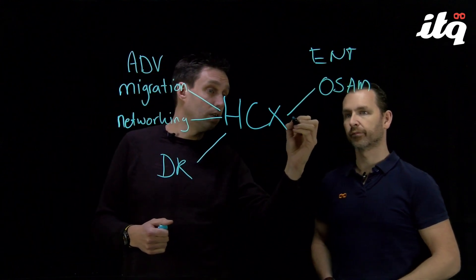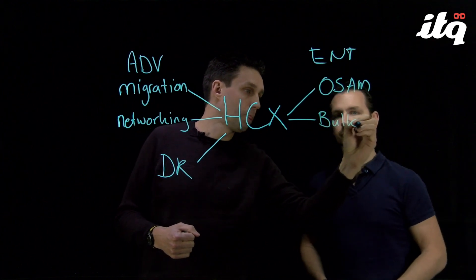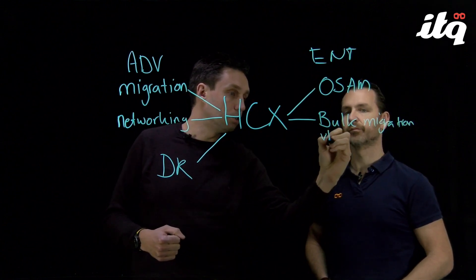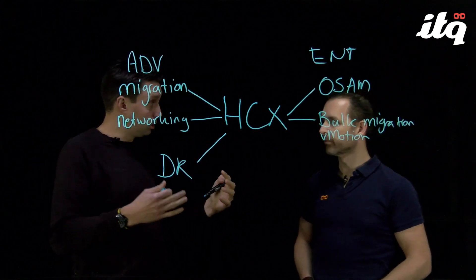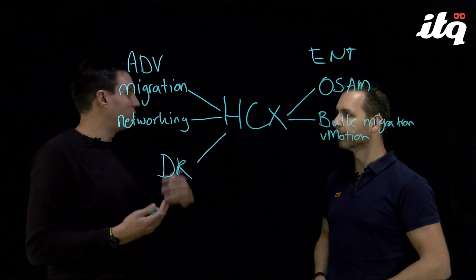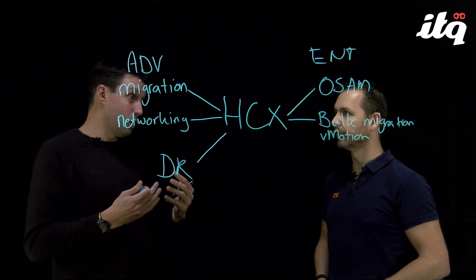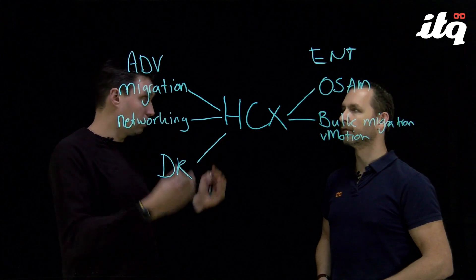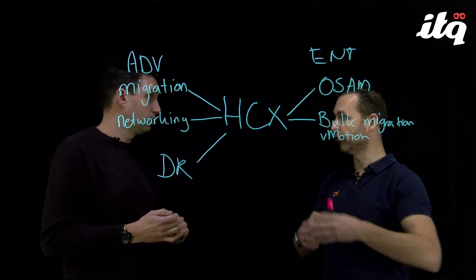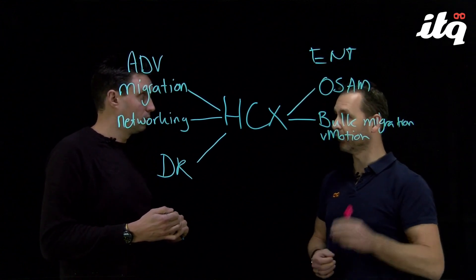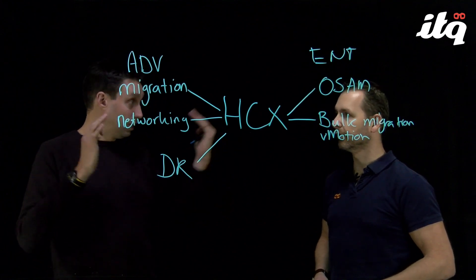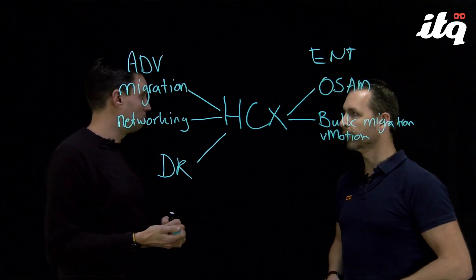Another feature that HCX Enterprise offers is a bulk migration option. This bulk migration uses vMotion. If we have a lot of virtual machines, we can do an initial replication from one site to the cloud, for example, and at the point in time that you want to do the actual cutover, that's vMotion — so no downtime. Using this feature, you can do a large-scale migration from on-premises to the public cloud. It first completes the initial replication, then a delta replication occurs in combination with the vMotion cutover.